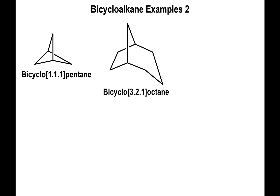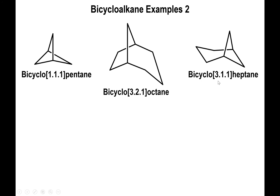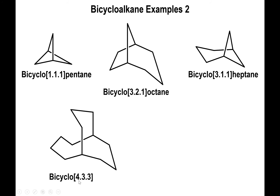For the next molecule, we count one, two, and three carbons to the left of the bridge heads, one to the right, and one on top, so this is bicyclo[3.1.1]. Adding those values gives five, plus two more gives seven: this is bicycloheptane. For the molecule below that, we have one, two, three, four carbons to the left; one, two, three carbons on top; and one, two, three carbons to the right — so this is bicyclo[4.3.3], which amounts to ten. Adding two more gives twelve carbons altogether: this is bicyclododecane.